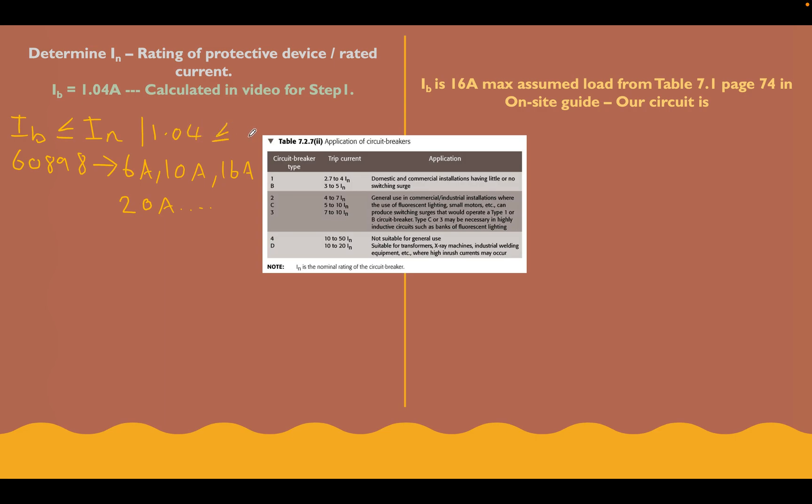Our protective device has got to be greater or equal to that number. Let's have a look. What are our options? 6 amp looks like it's going to be the one. That's the next size up from our design current and it's larger than this number. So let's write this in - 6 amps. What we can say down here is that our IN for this circuit is going to be a 6 amp circuit breaker, and let's come back to this in a minute when we choose the type.